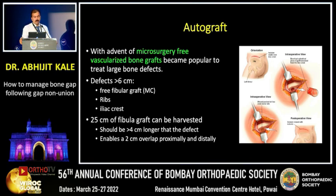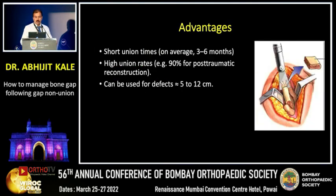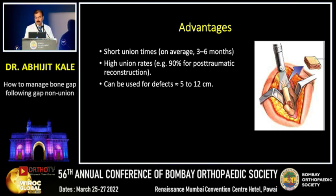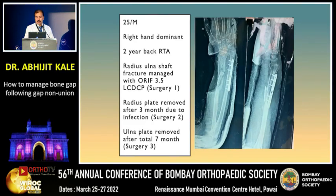Coming to the second option — autograft. Graft from the iliac crest, ribs, or fibula is harvested and placed at the site of the gap non-union. The advantages are that this shortens the union time, chances of union are high, and this procedure can bridge a defect from 5 to 12 centimeters.